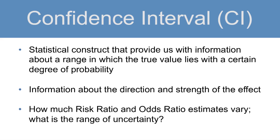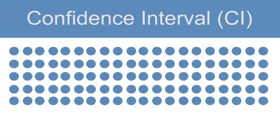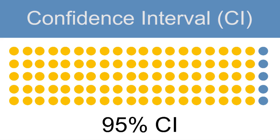We can answer the question: what is the range of uncertainty about our estimate? If we perform an experiment 100 times and calculate an estimated risk ratio each time, the 95% confidence interval is expected to contain the true value of the risk ratio 95 out of 100 times. 95 is a commonly used confidence interval. However, sometimes you might also see 90 or 99% confidence intervals.